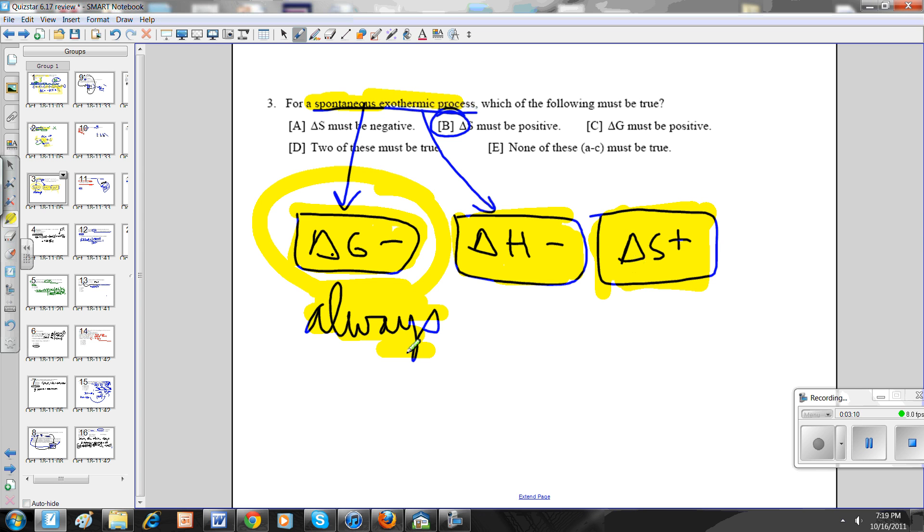So the only situation where delta H is negative and delta G is going to be negative is with when it is always spontaneous, delta S is positive. You have to basically approach it. If they tell you spontaneous, you need to know that that tells you the sign for delta G. If they tell you non-spontaneous, it tells you the sign for delta G. Exothermic, you should know that delta H is negative. In this case, since they don't mention temperature, then you have to basically find the only situation where that would be the case would be always. And the correct answer is B.